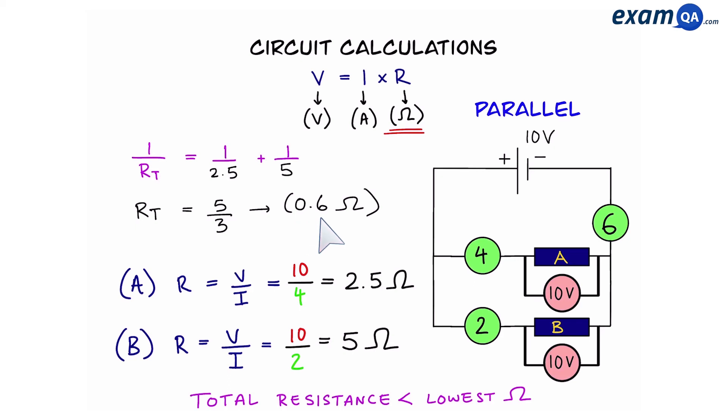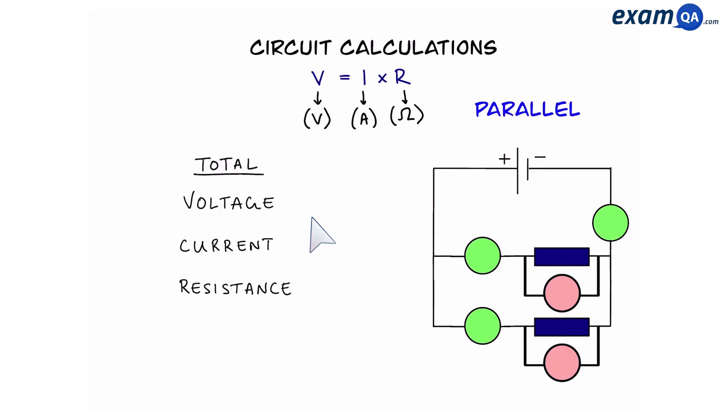Now this equation is not in all exam boards so you're going to have to double check with your specifications to see if you have to know this. However the rule that the total resistance is lower than the lowest is in all exam boards. So to summarize, voltage, current and resistance. We know that a voltage is going to be the same everywhere in a parallel circuit. Current gets shared between the branches and resistance, the total resistance is smaller than the lowest.